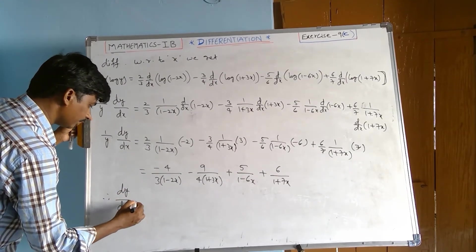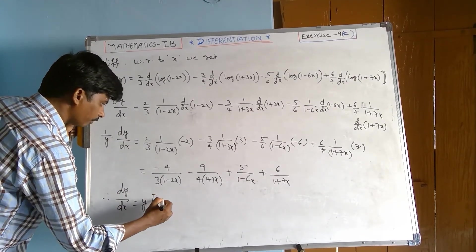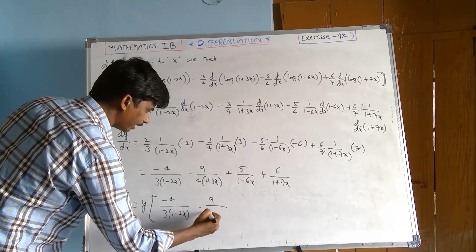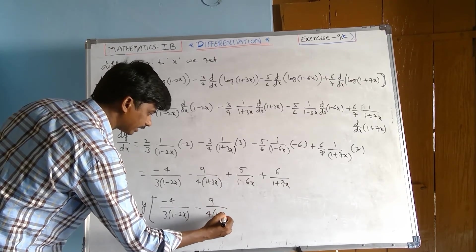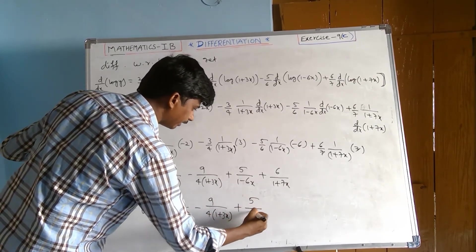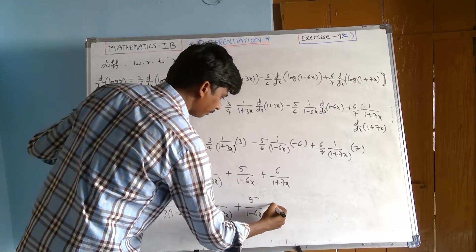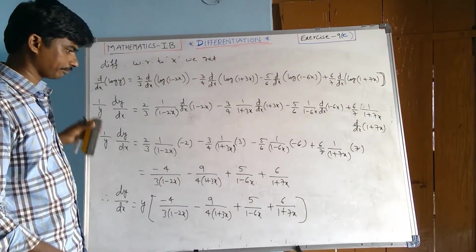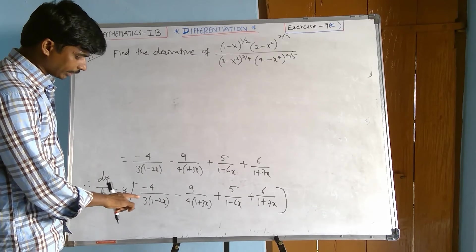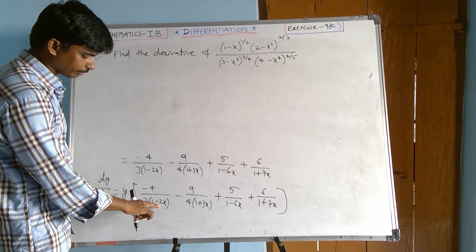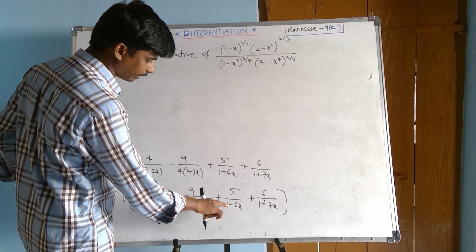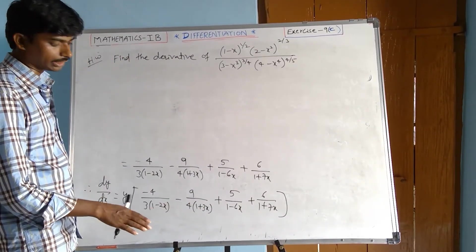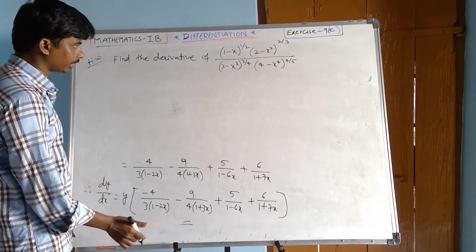Therefore dy/dx equals y times [minus 4/(3(1 minus 2x)), minus 9/(4(1 plus 3x)), plus 5/(1 minus 6x), plus 6/(1 plus 7x)]. This is the solution to the problem.